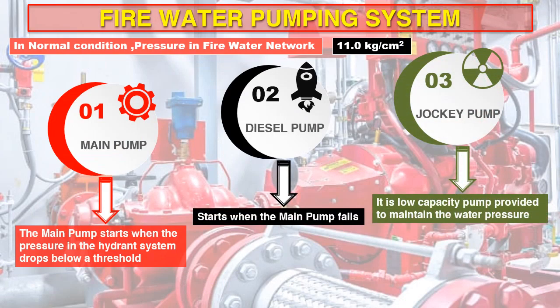In normal condition, the pressure in the fire water network will be kept at 11 kg/cm². In case of any minor leakage, the pressure will gradually drop, which will be sensed via a pressure switch and will operate the selected jockey pump automatically. Once the system pressure is maintained, the jockey pump will stop automatically. When hydrants or deluge valves are operated in a fire, the pressure will drastically drop, thereby operating the fire pump sequentially. The jockey pumps and fire pumps are interlocked such that the jockey pump stops as soon as the fire pump is started.